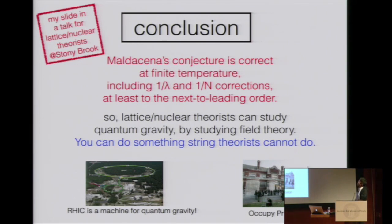Maldacena conjecture is correct at finite temperature, including 1/λ and 1/n correction. Lattice or nuclear theorists can study quantum gravity by studying field theory. If they apply their method to solve super Yang-Mills, then they can say something about quantum gravity. That's what string theorists cannot really do. I said lattice is a machine for quantum gravity for that purpose. Maybe you can even occupy brainstorm.